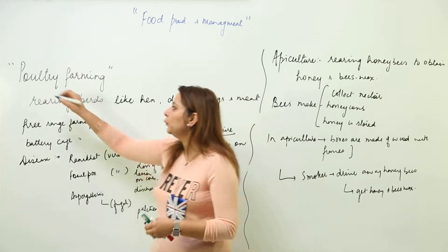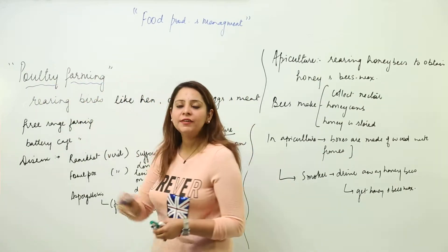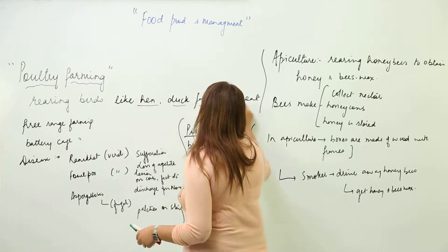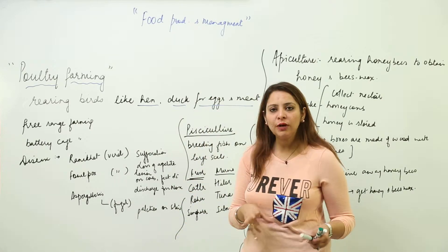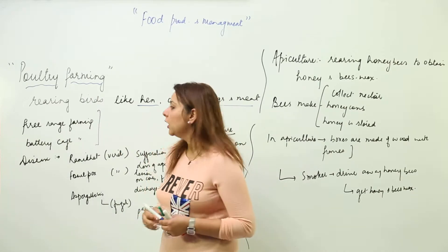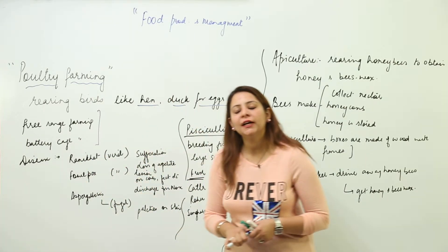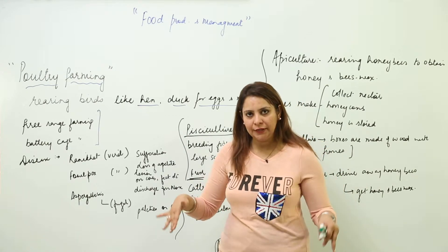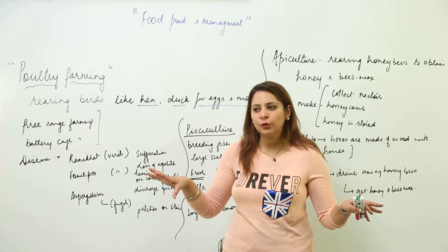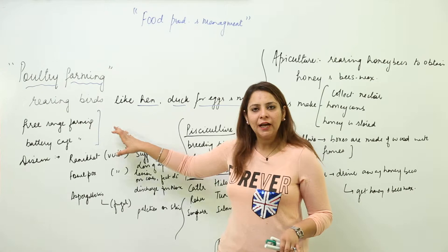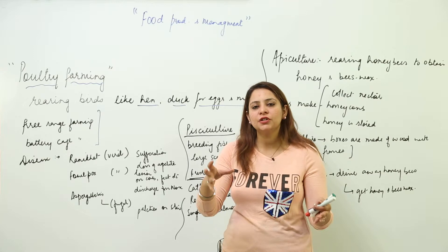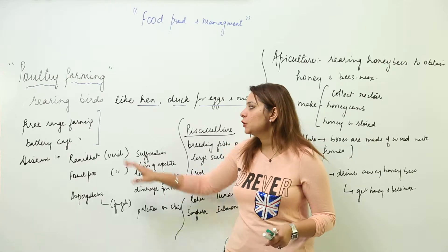We are going to start with poultry farming. In poultry farming we rear poultry birds — rearing birds like hen, duck, and others for eggs and meat is called poultry farming. We have two kinds of farming: free-range farming and battery cage farming. In free-range farming, there is a certain area closed by a fence or net where the birds are left free in the daytime to roam around, but at nighttime they are closed in a cage.